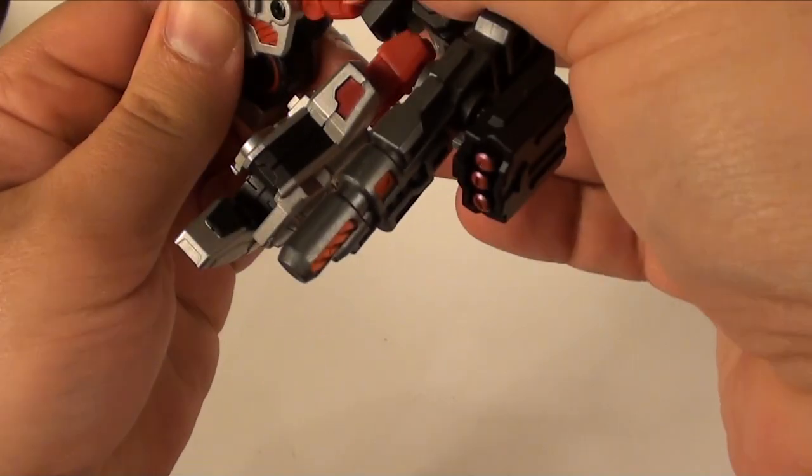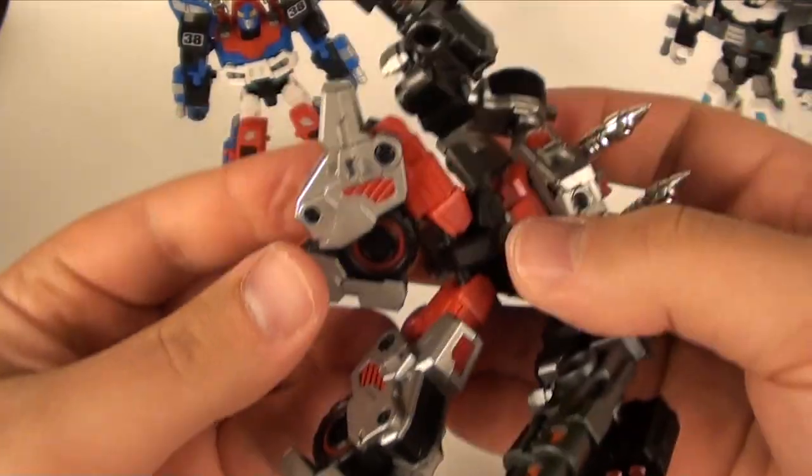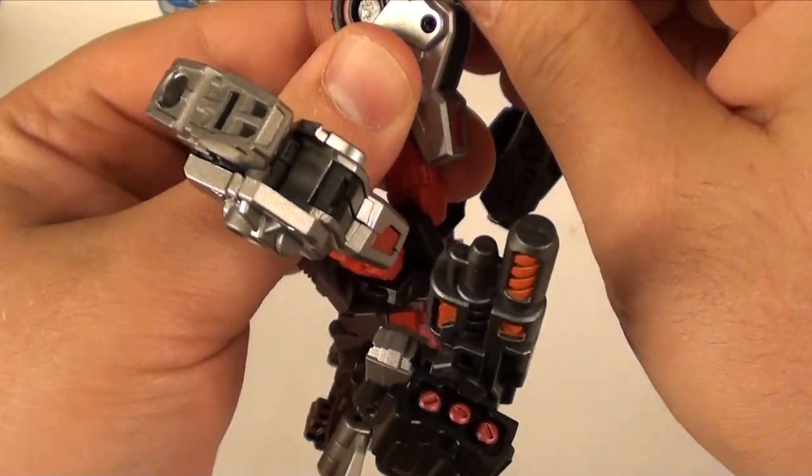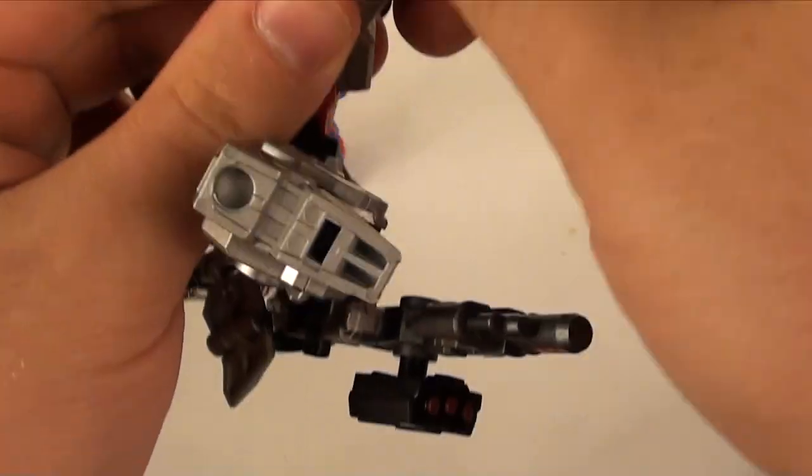As I said, if you lift this piece up you do get the waist swivel. Ball jointed thigh, the thigh swivel, the hinge joint on the knee that gets you more than 90 degrees.